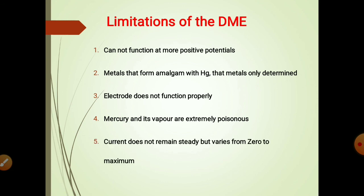As the drop gets formed and grows, the current does not remain steady but varies from 0 to a maximum value. The purification of mercury is essential, and also its cost is very high. These are some limitations of a DME. I hope you understand this lecture. Thank you for watching.